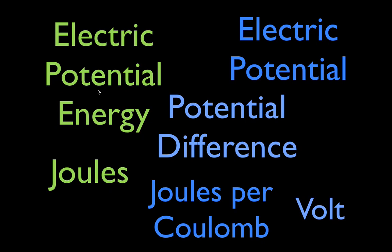Before we get into the meat of the video, let's remind ourselves of these terms. Electric potential energy is measured in joules. Electric potential — often referred to as just potential — and potential difference are measured in joules per coulomb, which we call the volt. We want to make sure we keep these different: electric potential energy versus plain old potential or potential difference. In this video we're going to focus mostly on electric potential energy, which is measured in joules.